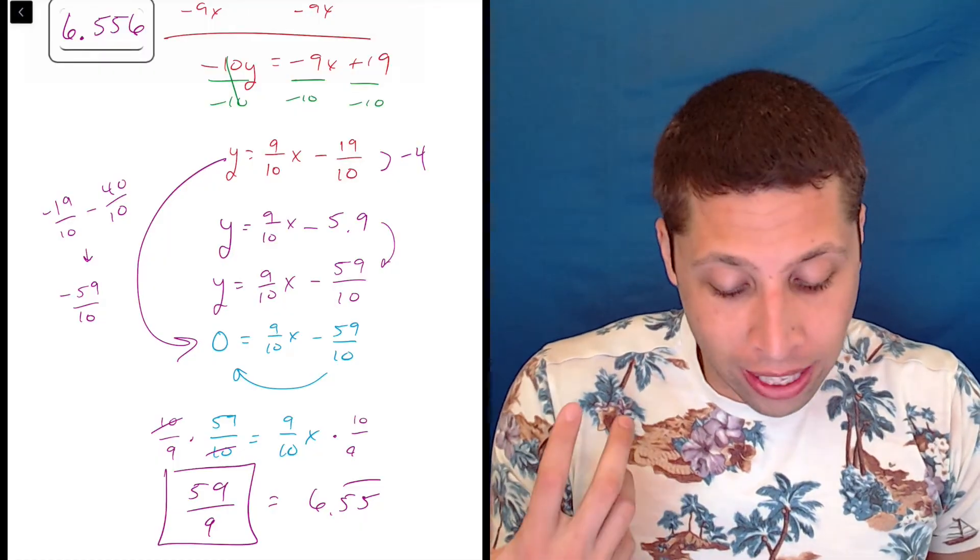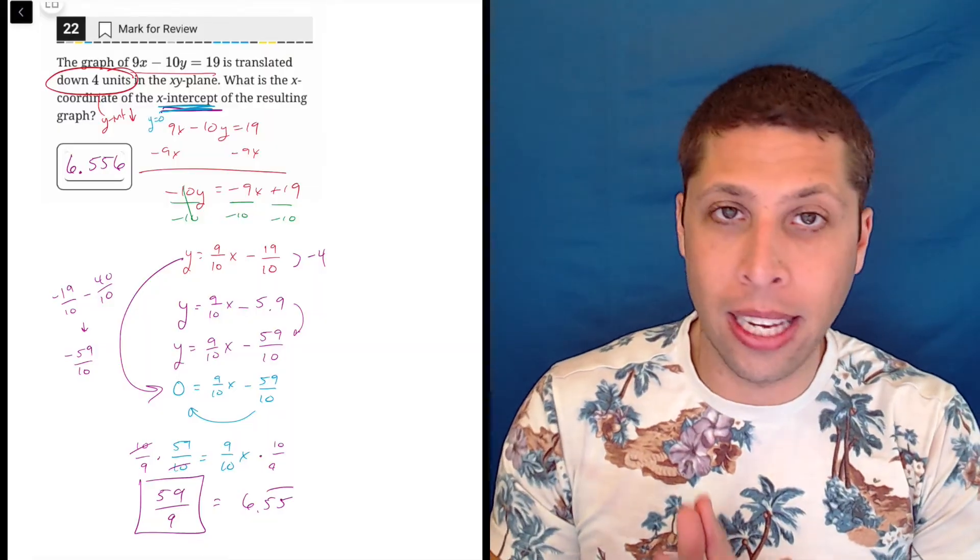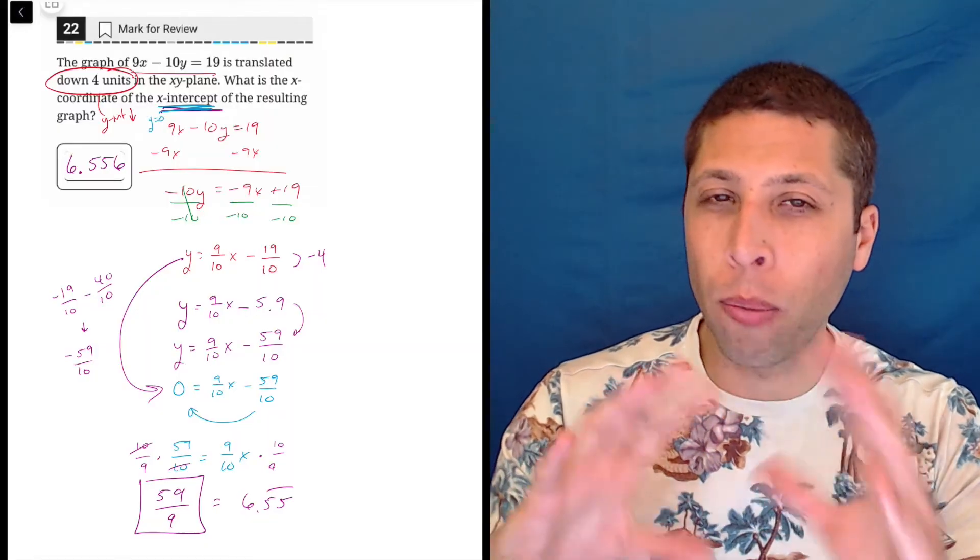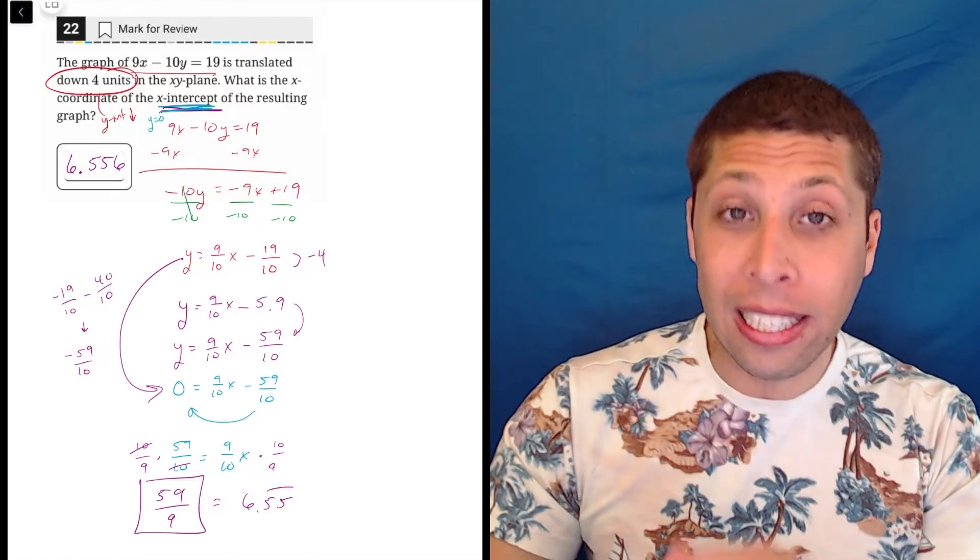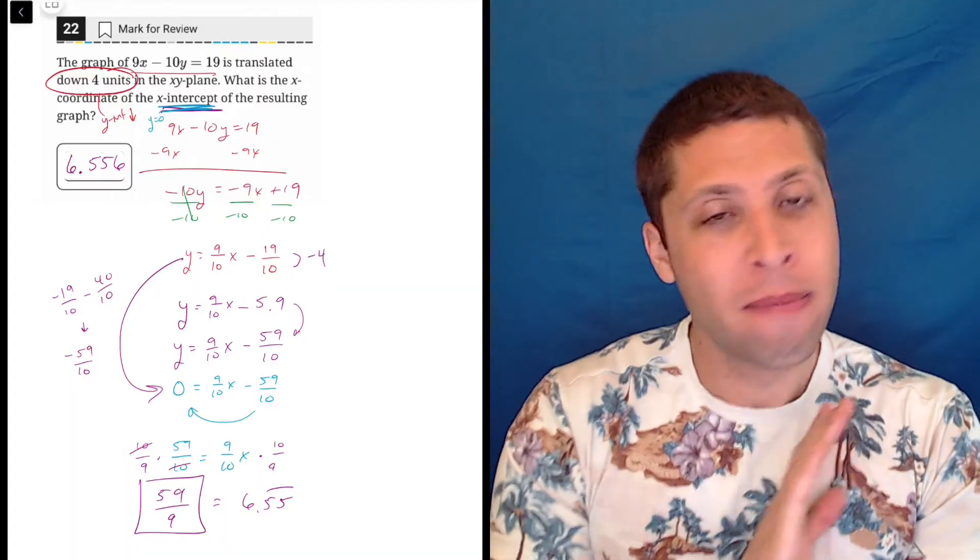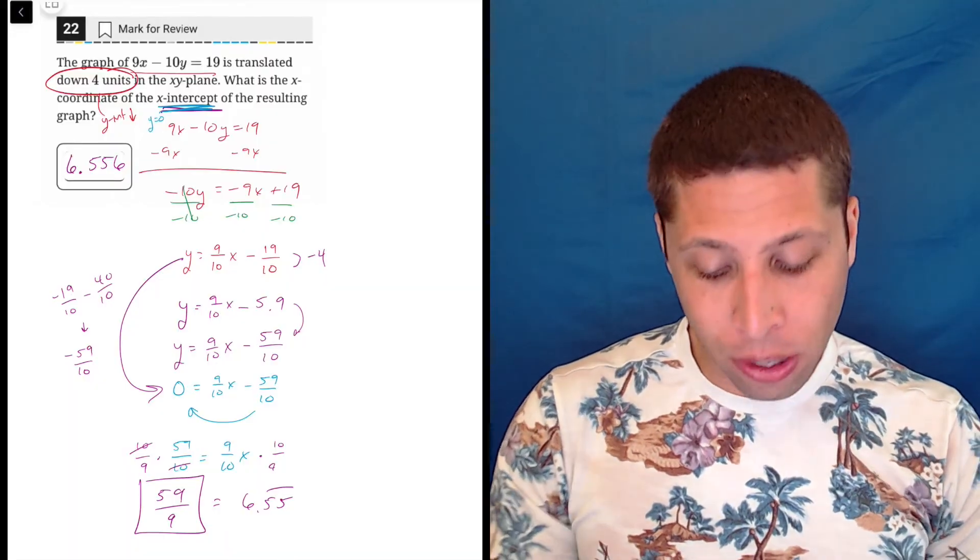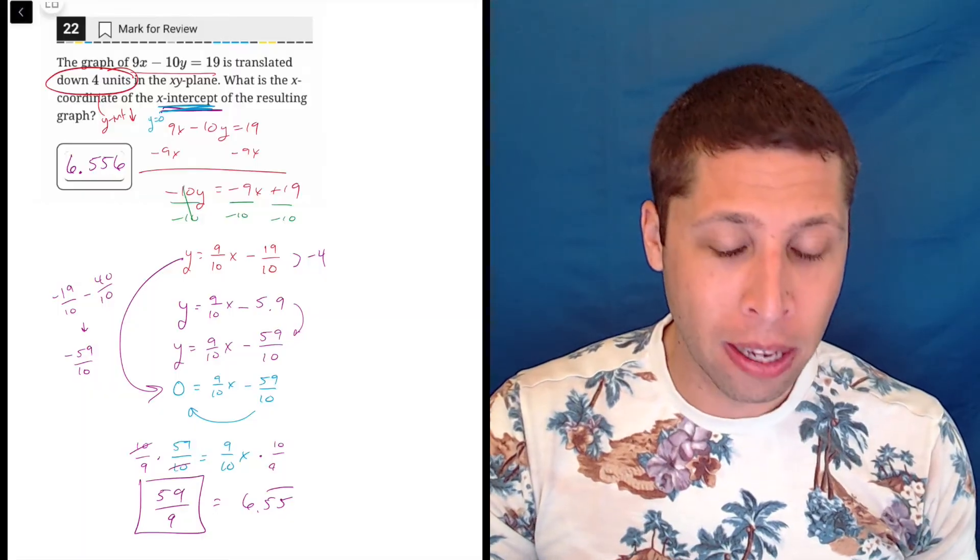Like I said, I get very nervous about these new student-produced response questions for the digital SAT. The rules about what to put in are very weird, and I get very nervous. If it's a normal, easy decimal like one-half or one-fourth that ends, I'm happy. But for these ones that are like repeating, I just, I don't know. I think the SAT did a bad job of setting this up.